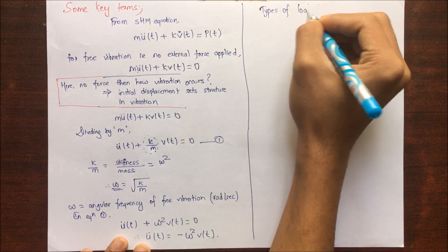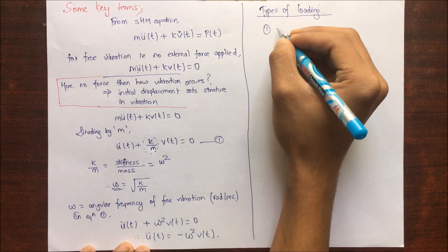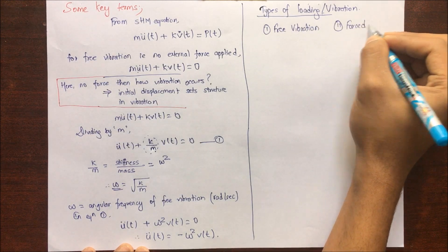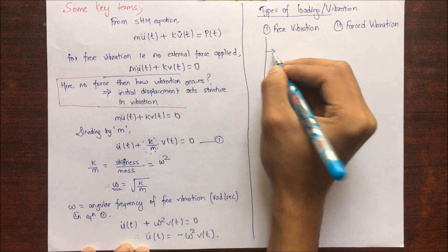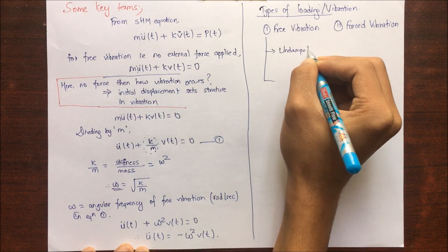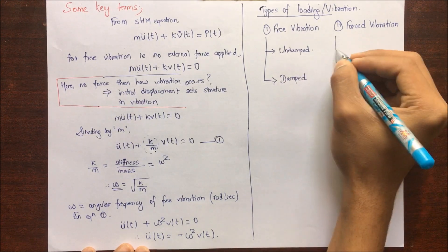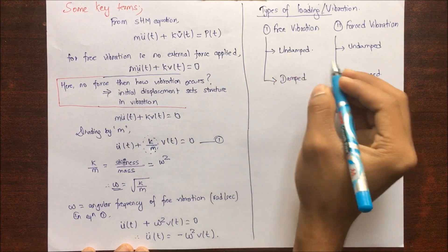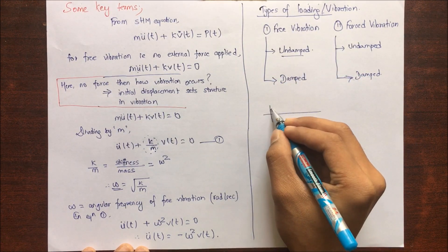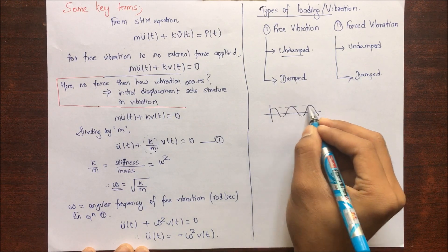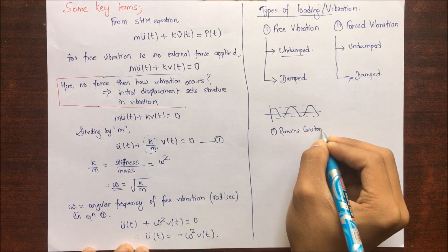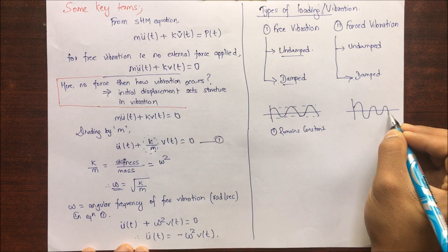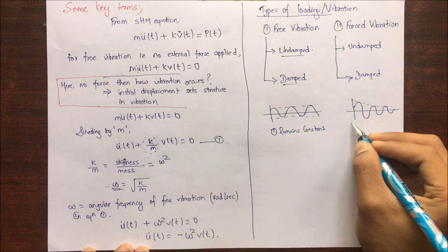Now, types of loading. The first is free vibration and the second is forced vibration. For free vibration we have two cases: undamped and damped. For forced vibration we also have undamped and damped cases. For undamped free vibration, the time-dependent graph shows that oscillation remains constant over time. For damped free vibration, the oscillation decays exponentially with time — so this is the decaying of oscillation.